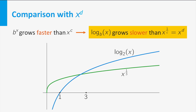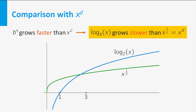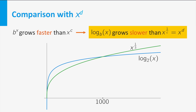If we compare for example the graphs of log base b of x and x to the power 1 over 3, it seems that for x larger than 3, the graph of x to the power 1 over 3 lies below the graph of log base 2 of x. But if we zoom out, we see that x to the power 1 over 3 catches up at some point and from there it grows much faster.